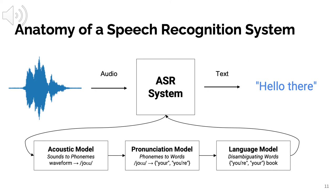Once you have a phonemic transcription, it isn't useful for most people who don't read phonemic notation. So the next step is a pronunciation model, which converts those phonemic transcriptions into words. This is a challenging problem because multiple words can be written differently but pronounced the same — for example, 'your' could be spelled Y-O-U-R, Y-O-U-apostrophe-R-E, or even Y-O-R-E. There has to be contextual disambiguation. That's what the language model does — the third component — where the system internalizes common word pairings from a large amount of training text.